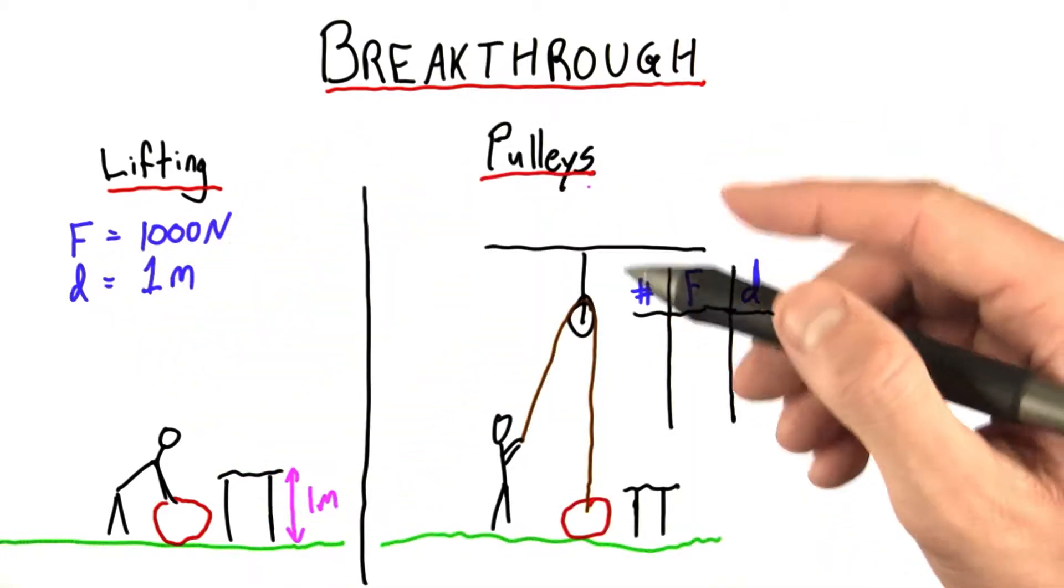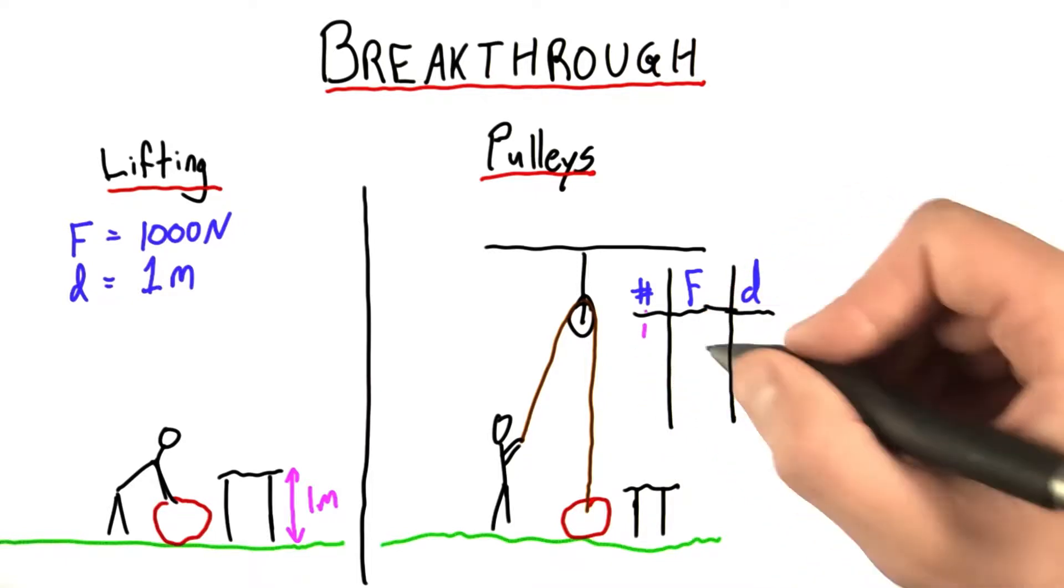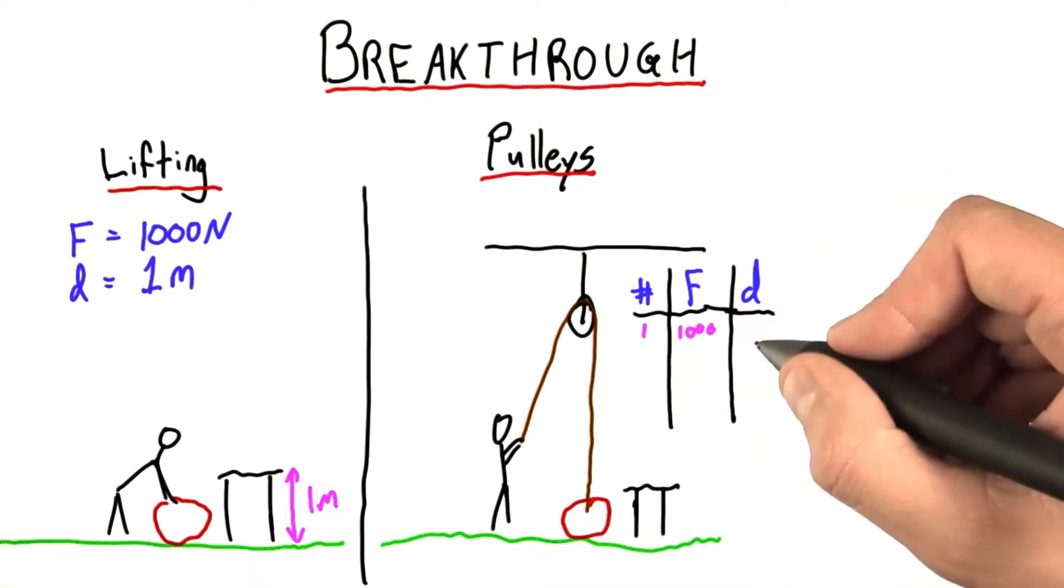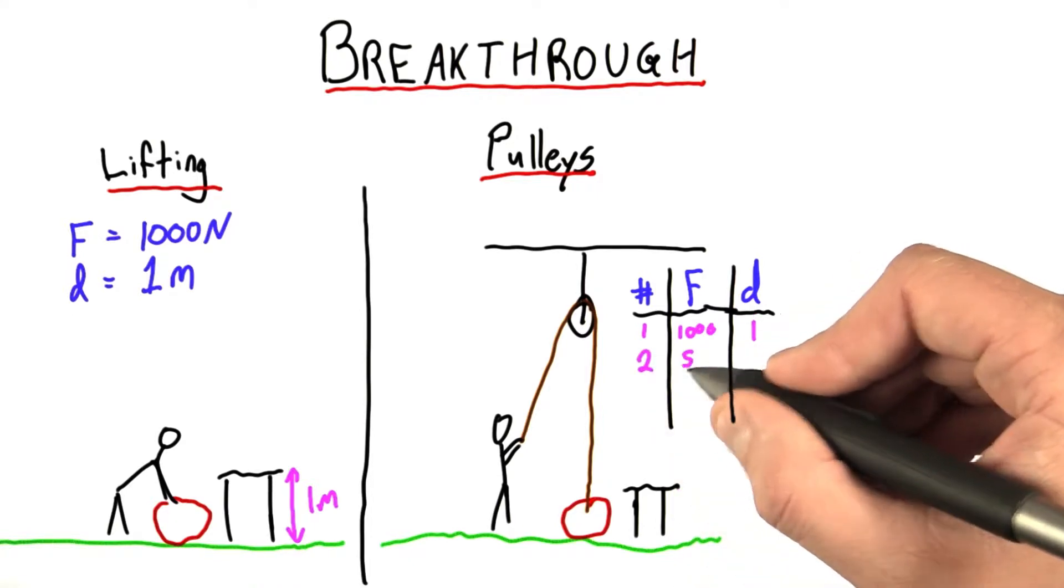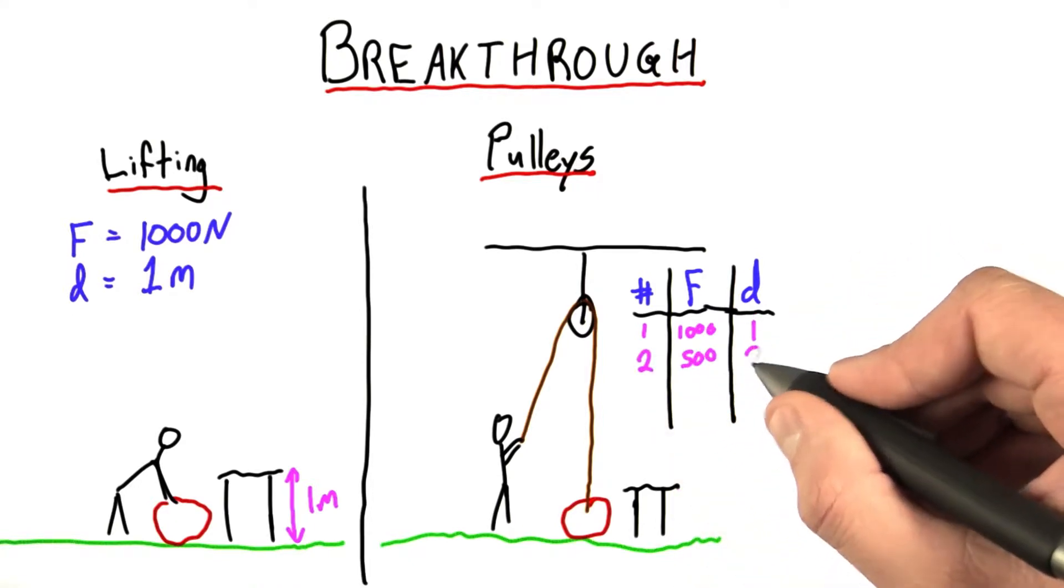If we used a pulley, we had a few options. If it was a simple pulley with one connection point, we'd have to exert a force of 1,000 newtons over the full distance of 1 meter. If it was a double pulley, we had to exert half that force, but over twice the distance, and so on.